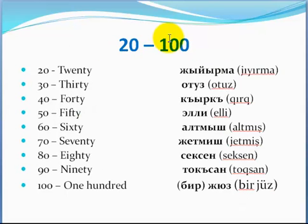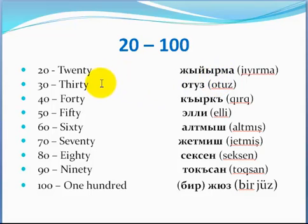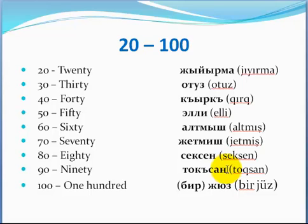The next section goes from 20 to 100. Here you have to memorize the numbers as they are: 20, 30, 40, 50, 60, 70, 90, 100. Sometimes you can just leave out the word '1' and just use the word '100' on its own.